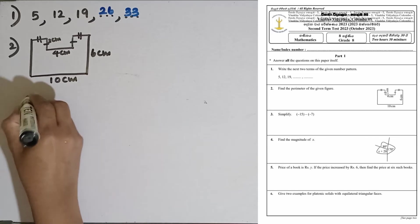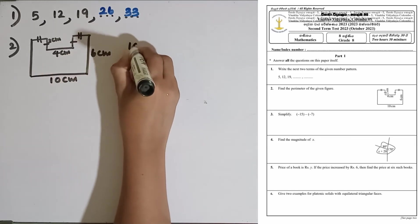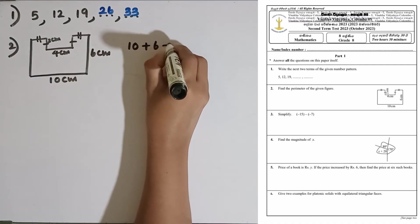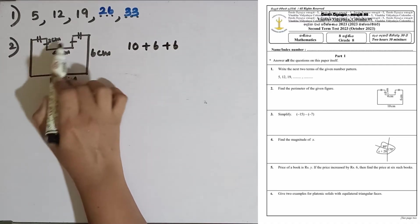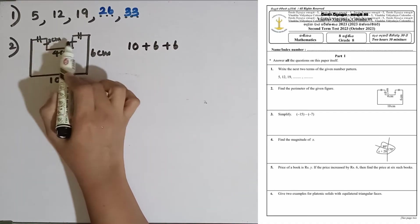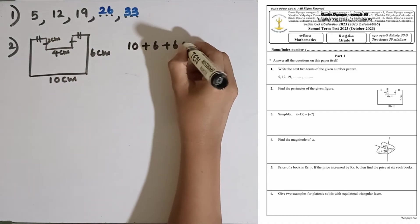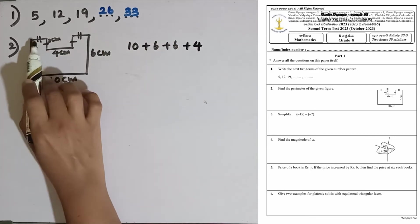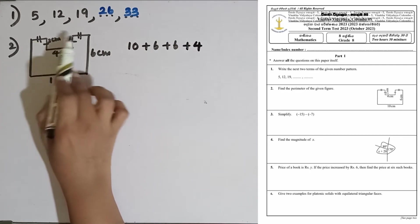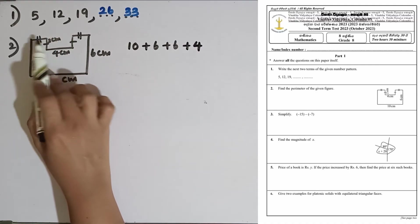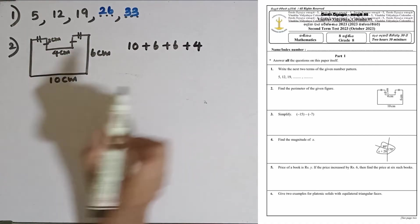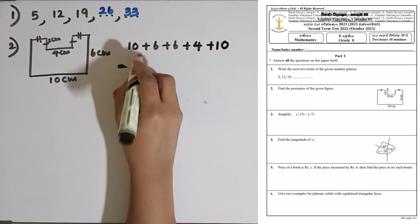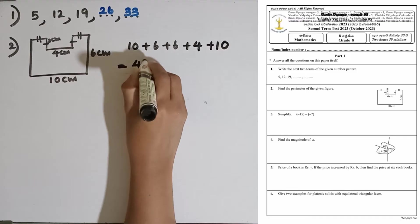We can take 10 plus 6 plus 6, then these two vertical sides, 2 plus 2 is 4. Then if we take these horizontal sides, the addition of these three sides is equal to 10 cm. So the total perimeter is 46 cm.